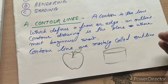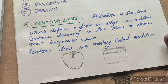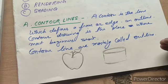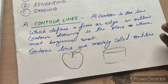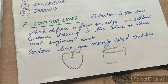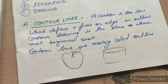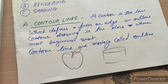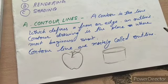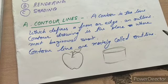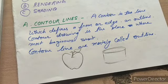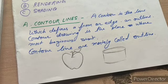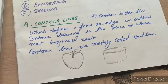A contour line — as I already said — in map-making refers to tracking across the surface linking points of the same height, so they are very different in appearance and purpose from contour lines in visual art. In visual art, mostly we use the contour line in making maps.